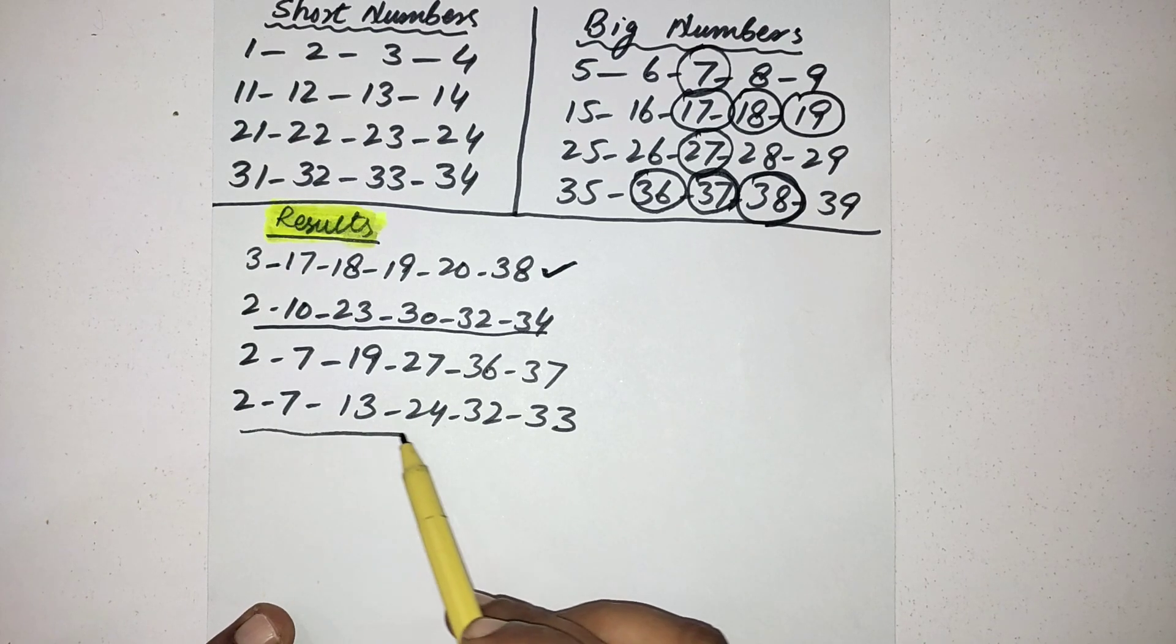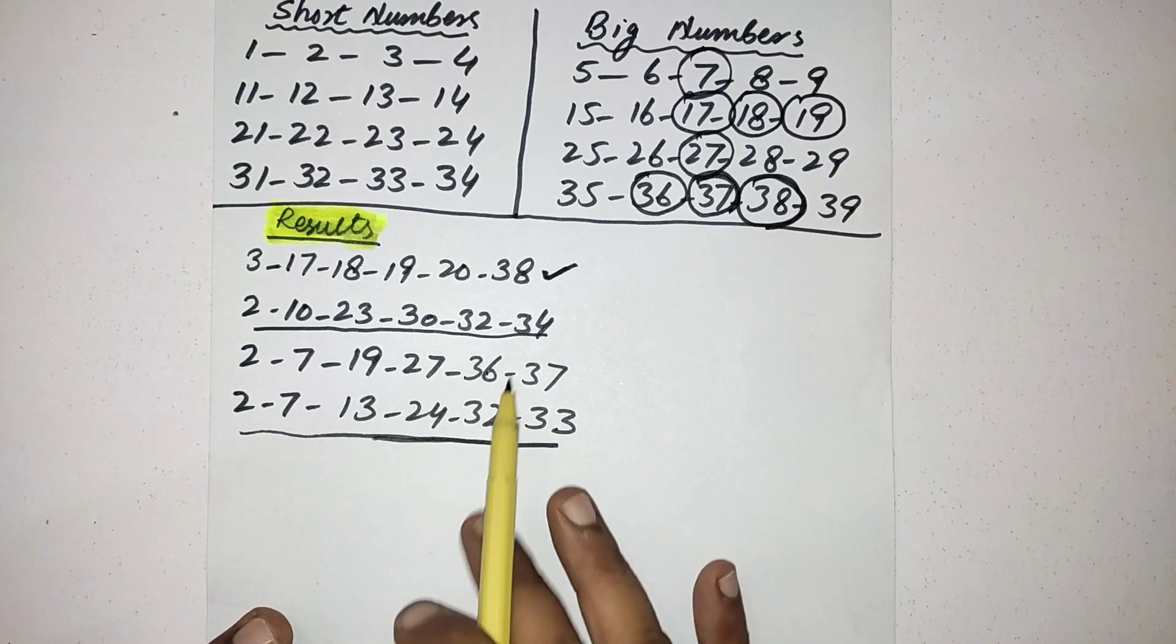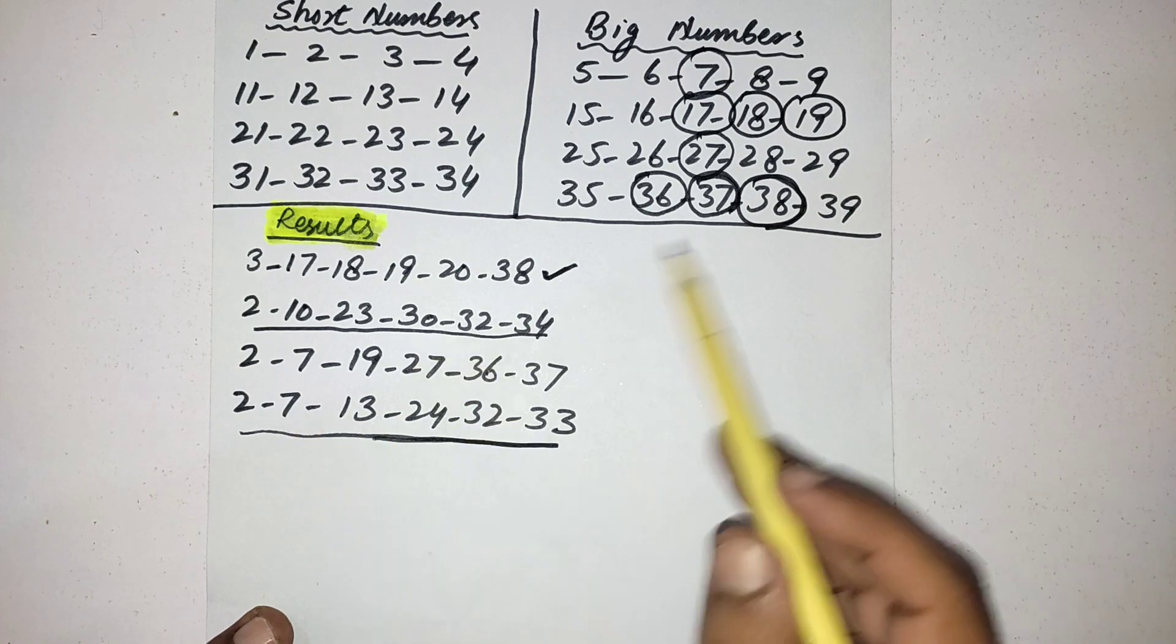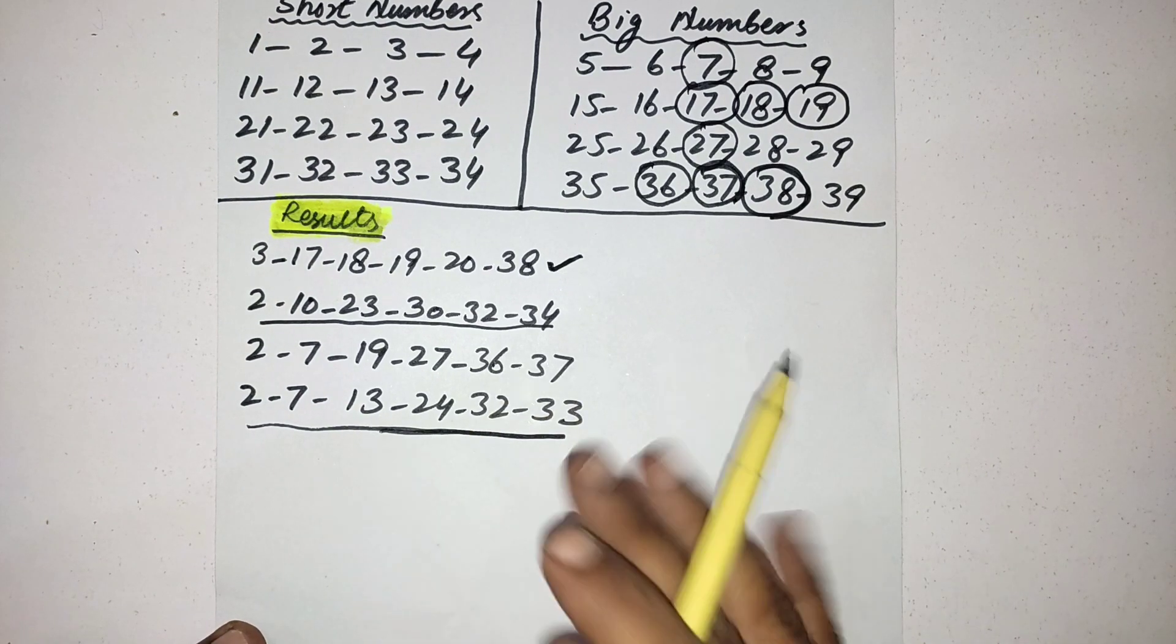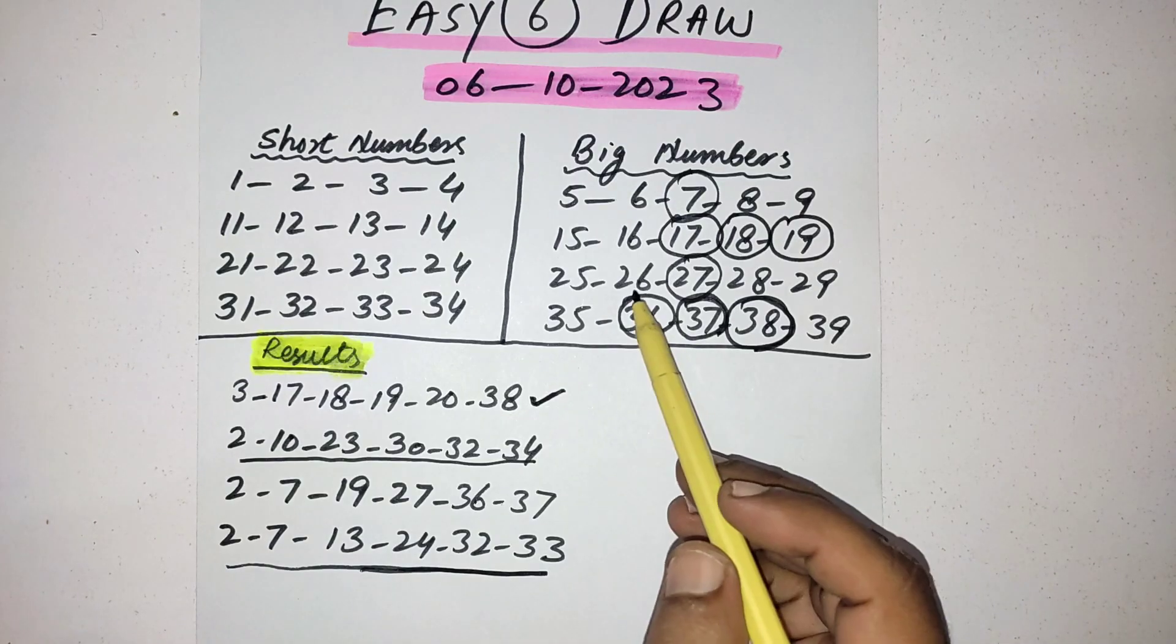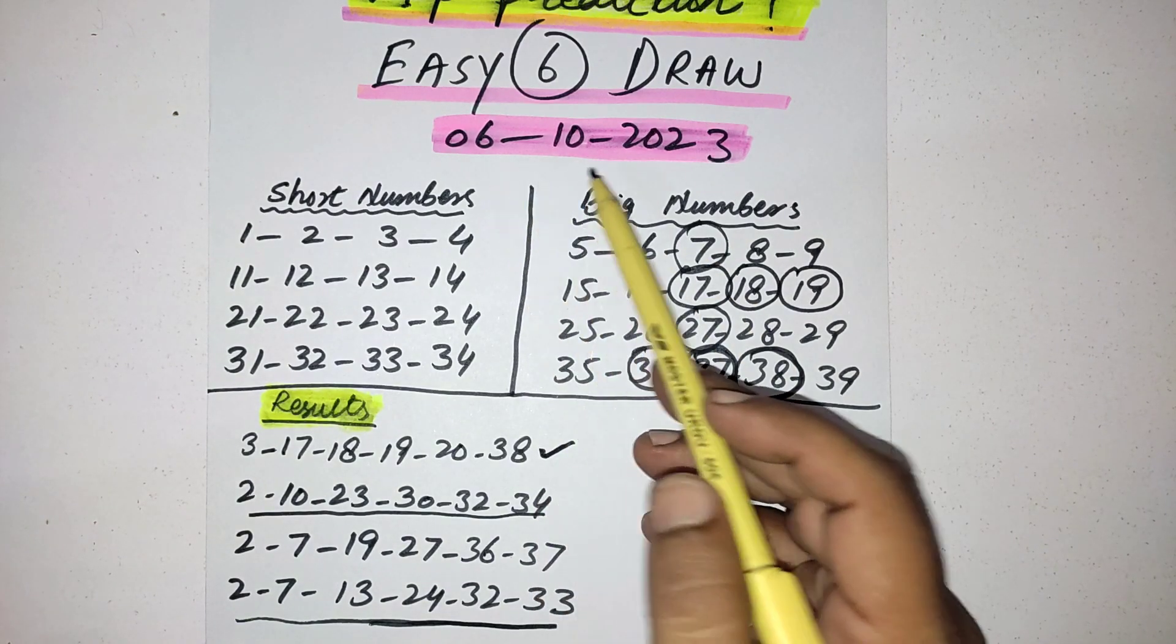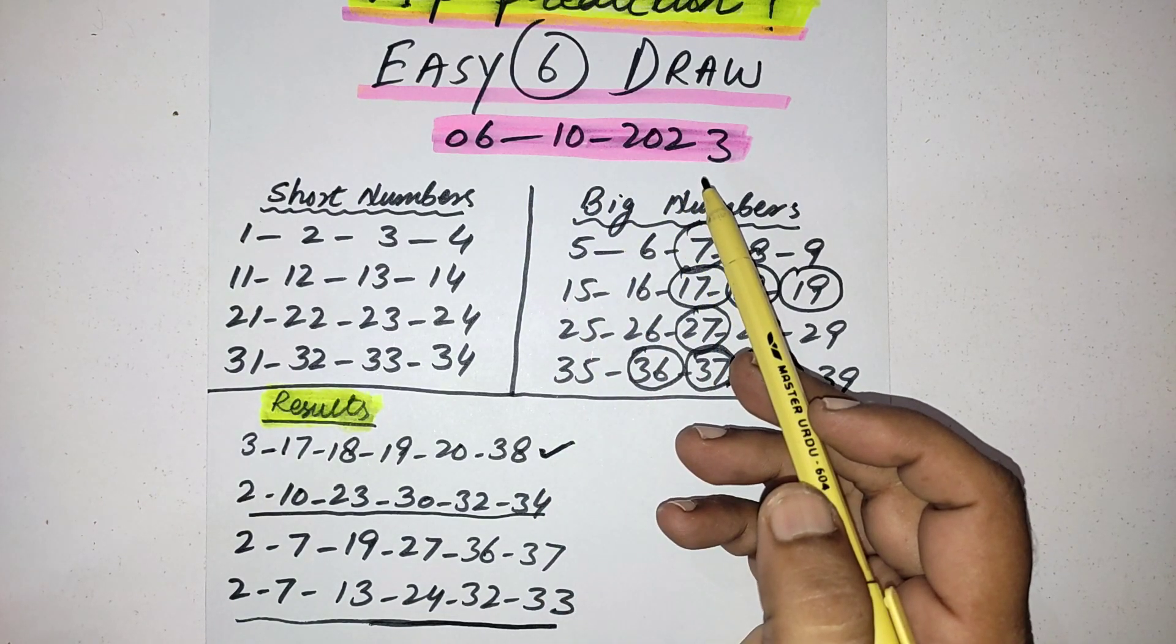Now it's turn again with the big numbers. The upcoming draw is drawing on 6 October 2023. Friend, in this draw you should select your maximum numbers from big numbers.